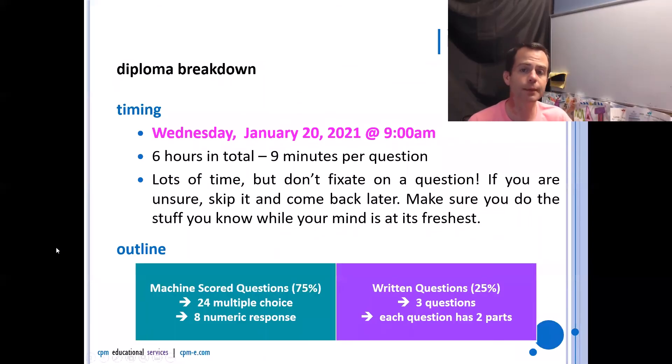The timing of your diploma, it is Wednesday, January 20th, 2021. It will be at 9am. Make sure you arrive a good 20 minutes early. Make sure you have ID with you and your calculator with you. Make sure you don't have a lid on your calculator because most teachers won't let you do that. In total, you have six hours to write. So that's essentially almost nine minutes per question. You've got lots and lots of time here to get this done. You should not be worried about timing at all.